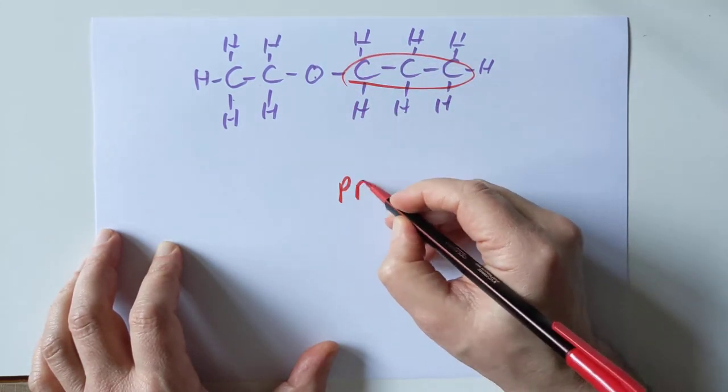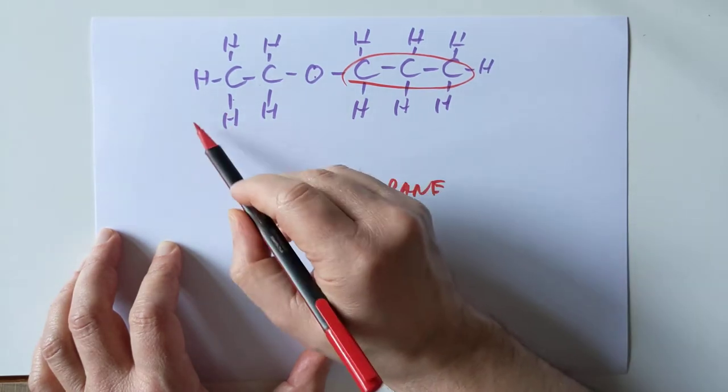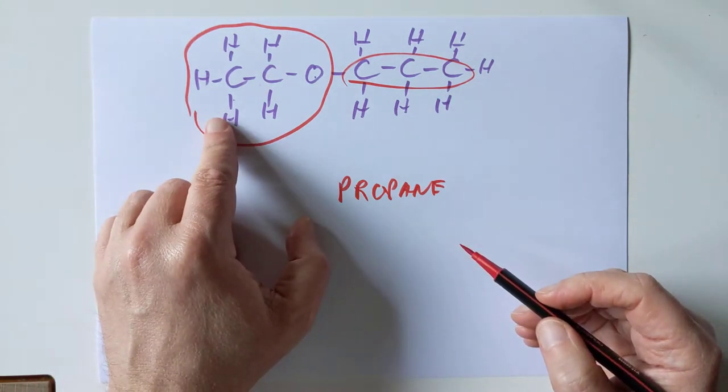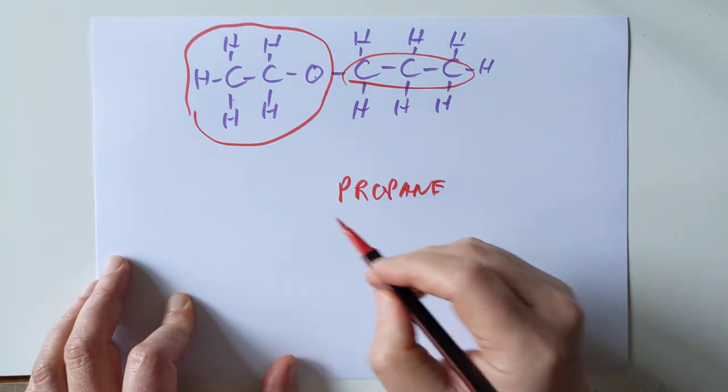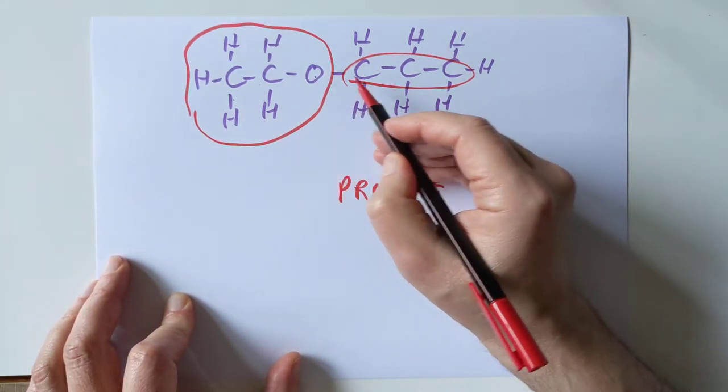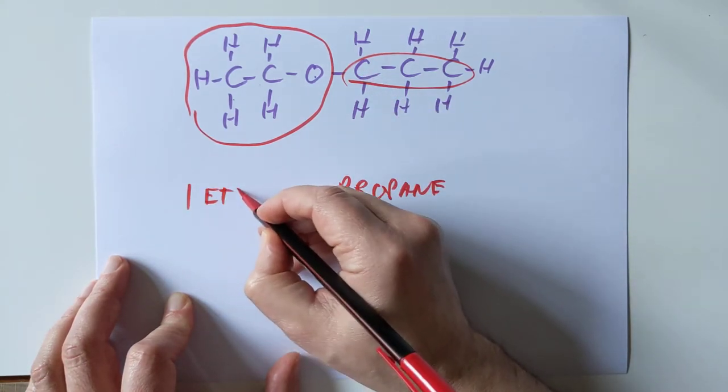And basically this is propane, regarded as propane with a hanger-on, a substituent, in the form of this. So these are called alkoxy groups. This is one, two carbons. So this is ethoxypropane, basically. And because it's stuck onto the first carbon in the chain, this is 1-ethoxypropane.